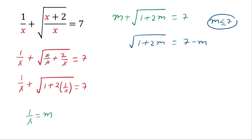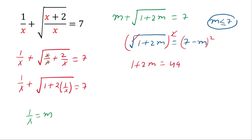So if we square both sides, this square root is cancelled by the square, giving 1 plus 2 times m. On the right hand side we apply the formula (a minus b) squared, giving 49 plus m squared minus 14 times m.